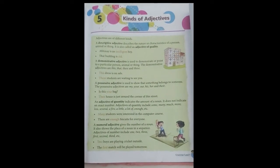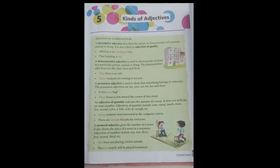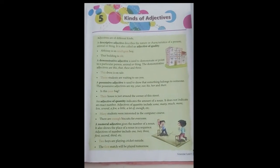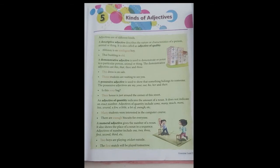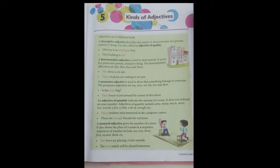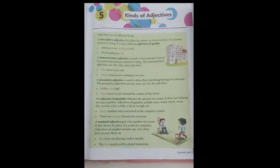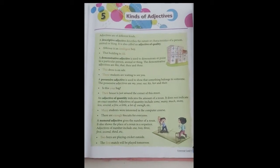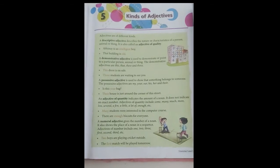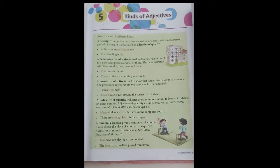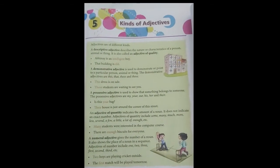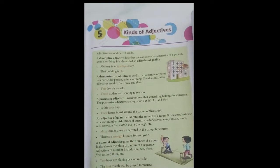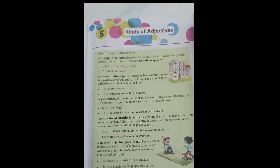Here we come to a numeral adjective. A numeral adjective gives the number of a noun and shows the place of a noun in a sequence. It also tells us how much, how many, or in what order the noun is — and it can be counted. Adjectives of number include: 1, 2, 3, 4, 1st, 2nd, 3rd, 4th, etc. We must note the difference between adjective of quantity and numeral adjective — we always get confused between these two. If we can count, it's adjective of number; if we cannot count, it's adjective of quantity. For example: 'Two boys are playing cricket outside.' 'The first match will be played tomorrow.' Here, 'two' and 'first' can both be counted, so they are numeral adjectives.